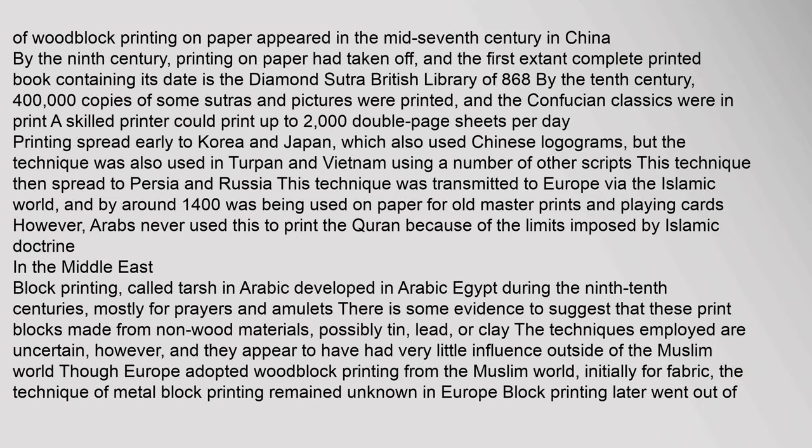Woodblock printing on paper appeared in the mid-7th century in China. By the 9th century, printing on paper had taken off, and the first extant complete printed book containing its date is the Diamond Sutra of 868. By the 10th century, 400,000 copies of some sutras and pictures were printed, and the Confucian classics were in print. A skilled printer could print up to 2,000 double-page sheets per day. Printing spread early to Korea and Japan, and also to Turpan, Vietnam, Persia, and Russia. The technique was transmitted to Europe via the Islamic world, and by around 1400 was being used on paper for old master prints and playing cards.